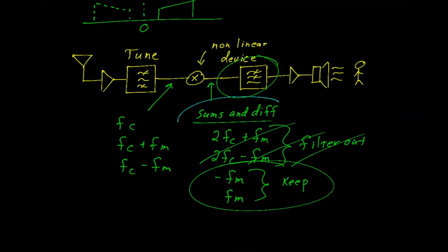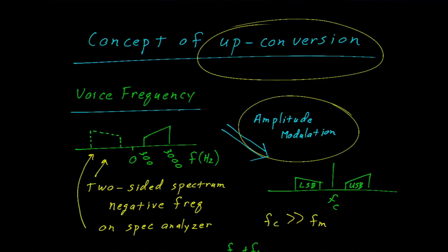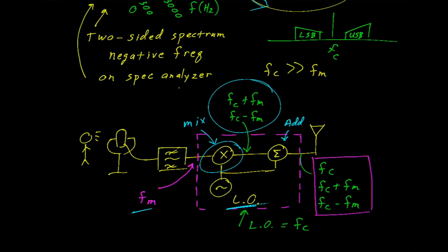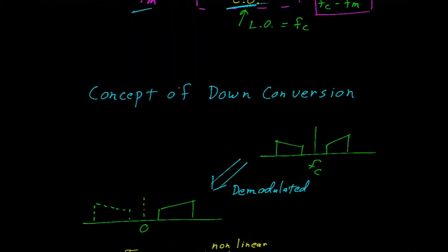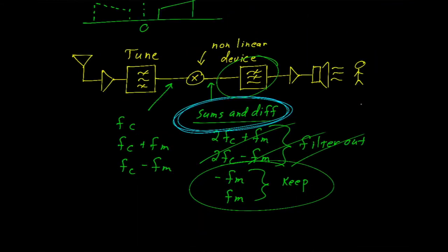I don't know that we stressed this enough when we talked about sums and differences. Going back to up conversion — isn't that just a sums and differences question? The mixer takes in the frequency of the modulation and the local oscillator, and produces the sums and differences: the carrier plus the modulating frequency, and the carrier minus the modulating frequency. When we look at the down conversion, it's the same thing — we've taken the sums and differences of those signals.